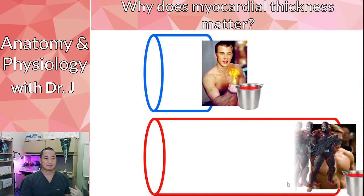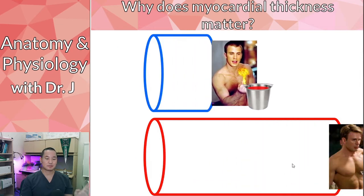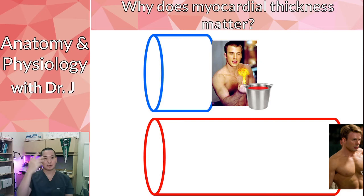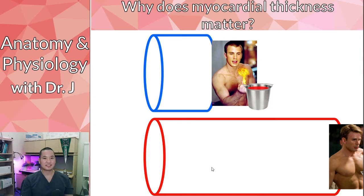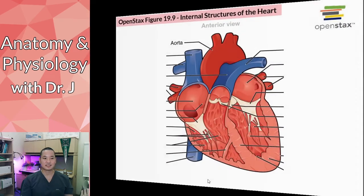That's why you give the ventricle with more muscle the task of pumping blood over a greater distance — all over the body — versus the pulmonary circuit, which only covers the short distance between the heart and the lungs. Not only that, there's a concept called resistance: there's more overall resistance in the systemic circuit compared to the pulmonary circuit. That's why the left ventricle is thicker.